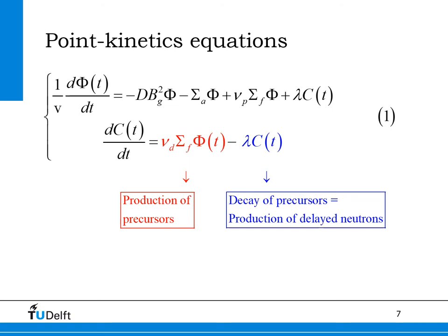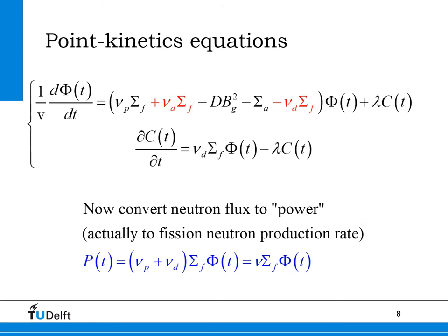When a precursor atom decays, a delayed neutron is produced because by definition each precursor atom produces exactly one delayed neutron upon decay. We now recast the fission term in the first equation by adding and subtracting nu_d times the macroscopic fission cross-section on the right-hand side. On the next slide, we will convert each term containing the total neutron flux to the total fission neutron production rate, shown in blue at the bottom of this slide. The total neutron production rate is proportional to the fission rate in the core, and therefore also to the total power produced in the core.